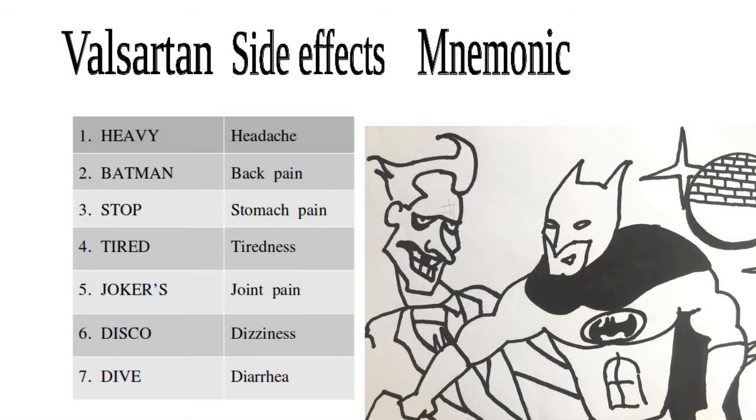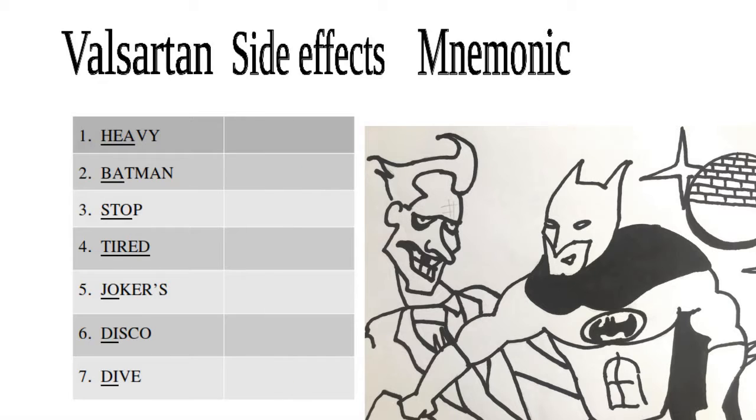Each word represents a counter side effect. Please take note of the first letters of the words because it guides to which side effect it is associated. Heavy is headache, Batman is back pain, Stop is stomach pain, Tired is tiredness, Jokers is joint pain, Disco is dizziness, Dive is diarrhea.